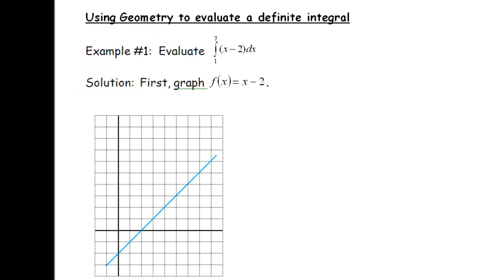Let's look at the first example. We are supposed to evaluate the definite integral from 1 to 7 of (x minus 2) dx. The only way we know so far to evaluate these is by using geometry, so we have to figure out what the area looks like. I'm going to graph f(x) = x − 2. This is just a straight line with a slope of 1 and a y-intercept of negative 2.